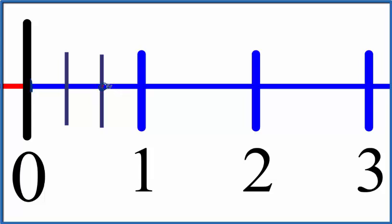And right here, this line, that's two-thirds on our number line. You could write this as a decimal.